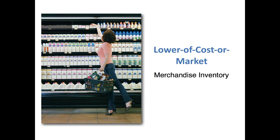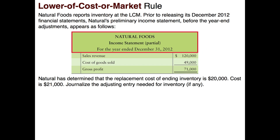what we paid for it — or market, whatever we could replace that inventory for. Whichever is lower, that's what we need to be recording the inventory at on the books. So let's look at an example. Here we have Natural Foods, which reports inventory at the lower of cost or market.